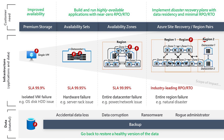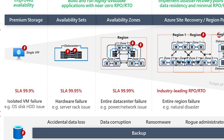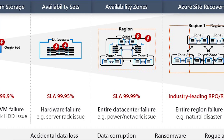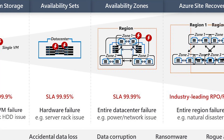An availability set is a grouping of two or more virtual machines in the same data center within an Azure region. Azure makes sure that the VMs you place inside that availability set run across multiple physical servers, compute racks, storage units, and network switches, helping to minimize the impact of any outages on your workload.